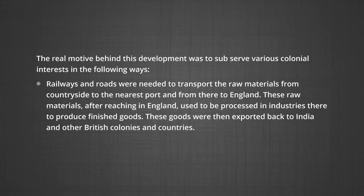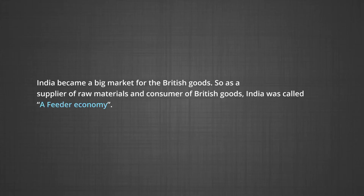Number one: railways and roads were needed to transport raw materials from the countryside to the nearest port and from there to England. These raw materials, after reaching England, were processed in industries to produce finished goods, which were then exported back to India and other British colonies. Once the finished goods reached the ports of India, they were transported by road and railways to various parts of the country for sale to Indian consumers at higher prices. In fact, India became a big market for British goods. As a supplier of raw materials and consumer of British goods, India was called a feeder economy.